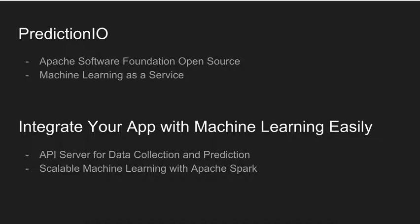The goal of Apache Prediction IO is to help software developers integrate their apps with machine learning easily. It provides an API server for data collection and real-time prediction, and you use Apache Spark as a scalable machine learning approach.